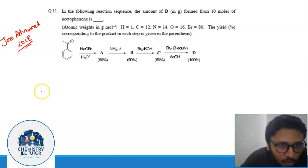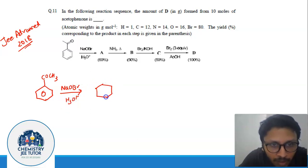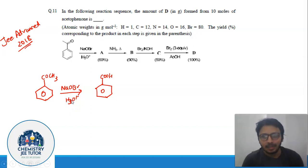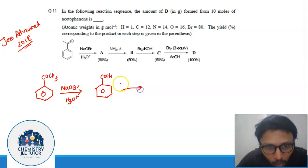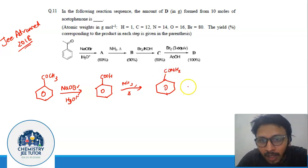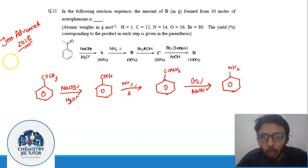Let us look at the reaction sequence. We have acetophenone and we apply NaOBr, then H₃O⁺ — you know what it does: it converts it to an acid. It first produces the sodium salt of the acid, and then H₃O⁺ converts it to an acid. Then we are given ammonia — on heating with ammonia it converts to an amide. These are very simple reactions.